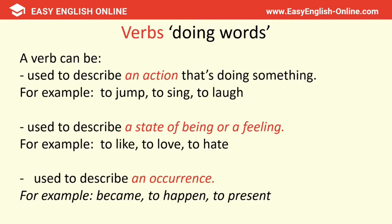Our next part of speech are verbs. A verb can be thought of as a doing word. It can be used to describe an action — for example, to jump, to sing, or to laugh. Verbs can also describe a state of being or a feeling, for example to like, to love, to hate. Or a verb can describe an occurrence, like the word 'became' — the caterpillar became a butterfly. There are many more types of verbs, such as main verbs, auxiliary verbs, modal verbs, etc. Please see my video on verbs to understand these in more detail.